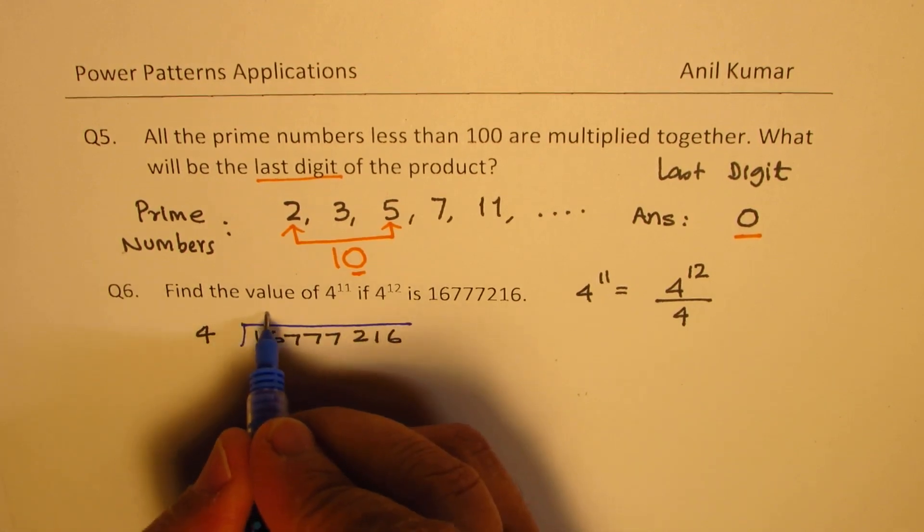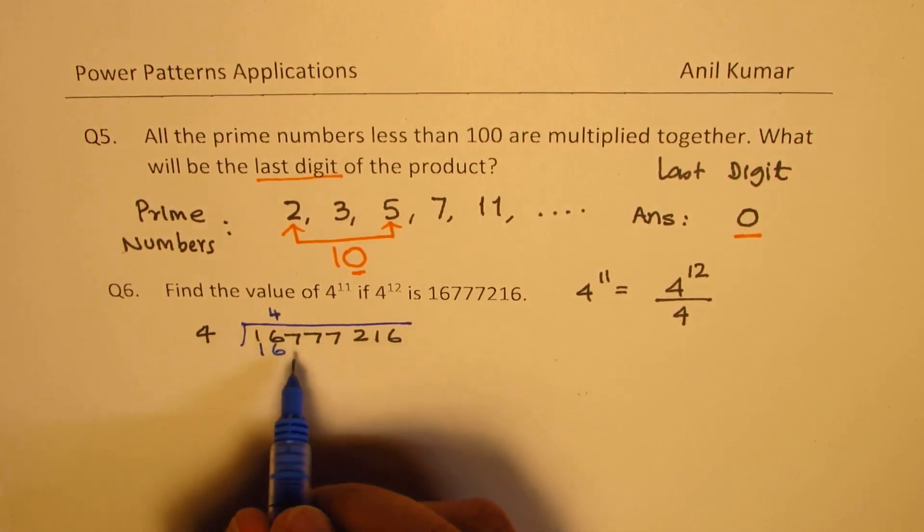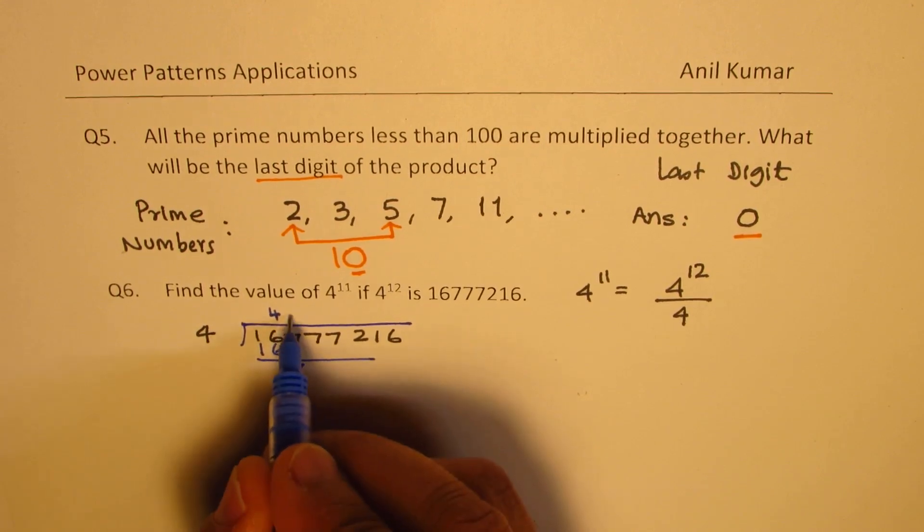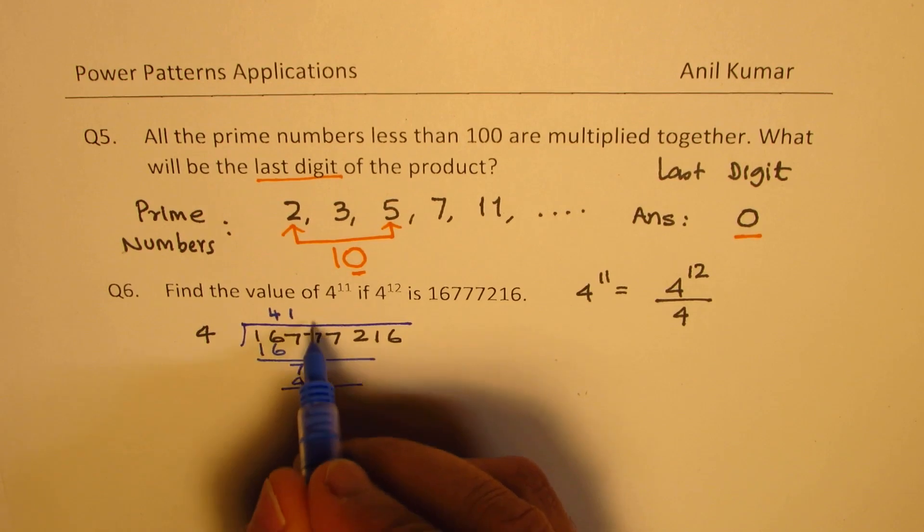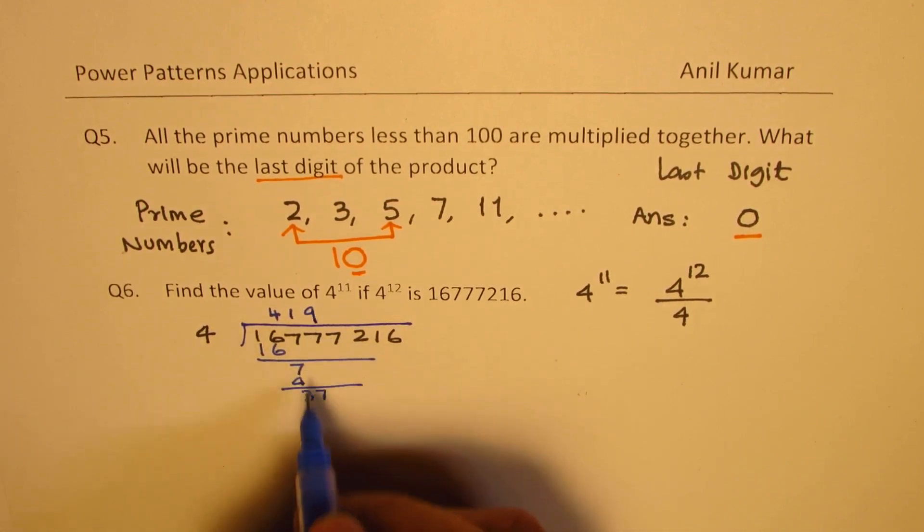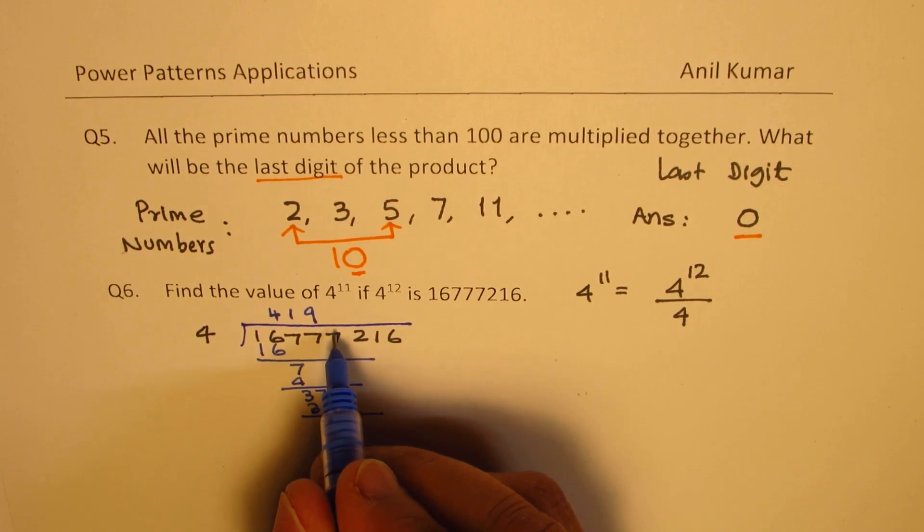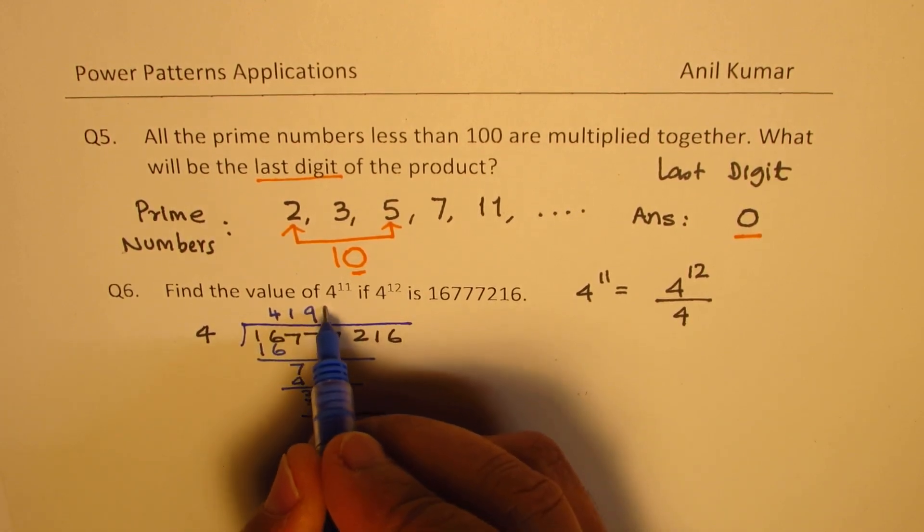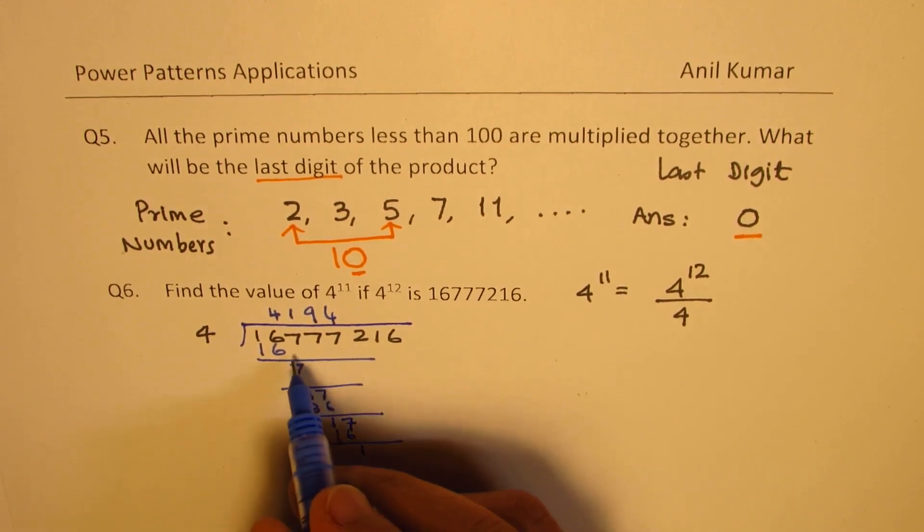So 4 times 4 is 16. And then we have this number coming down. So we have 7. So 4 times 1 is 4. So we have this 3, bring down 7. So 4 times 9 is 36. So bring down the next 7. So we have 1 here and 7. 4 times 4 is 16. So remainder 1. So we have brought down 3 7s.